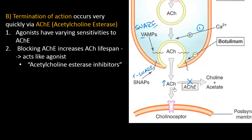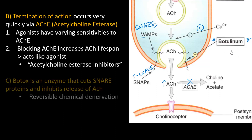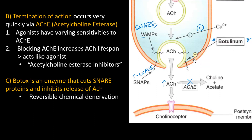The last important point has to do with botulinum — the boards love botulinum, it's incredibly high yield. Every couple of years the FDA approves a new treatment using Botox, starting with wrinkles and evolving into many things. Botulinum is an enzyme; the SNARE proteins wrap around it and get cleaved, so acetylcholine cannot be released into the nerve terminal. With no acetylcholine, this essentially leads to chemical de-innervation or paralysis.